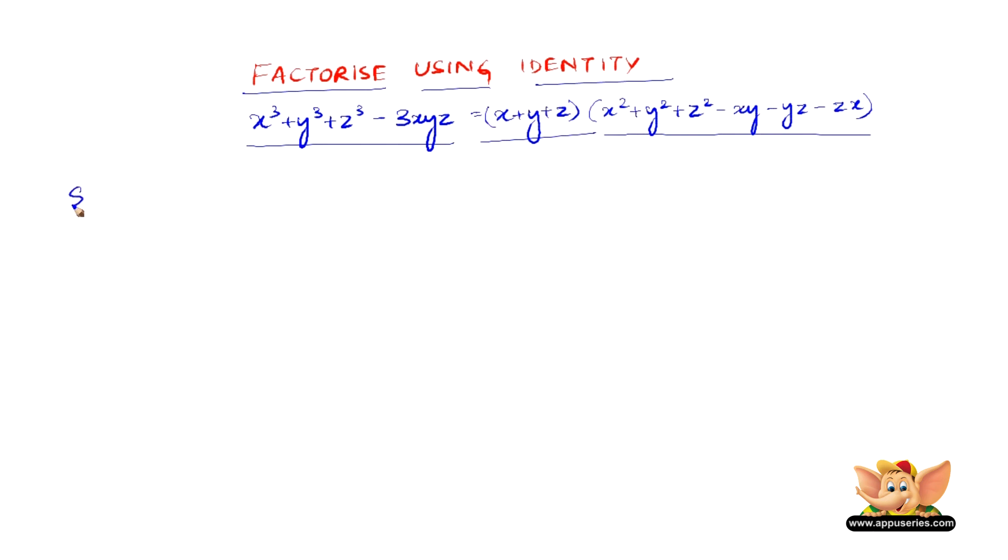Now, let us consider 8x³ + y³ + 27z³ - 18xyz and what we can do here is compare this with this identity.